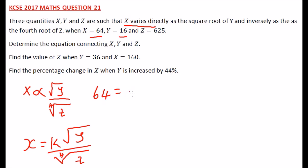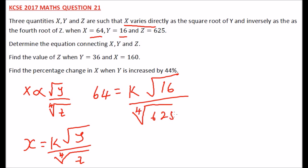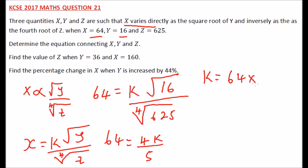When x is equal to 64, it is equal to k times the square root of 16 divided by the fourth root of 625. The square root of 16 is 4, so we have 4k divided by the fourth root of 625, which is 5. That is, 5 times 5 times 5 times 5 equals 625. We will be able to get k is equal to 64 multiplied by 5.